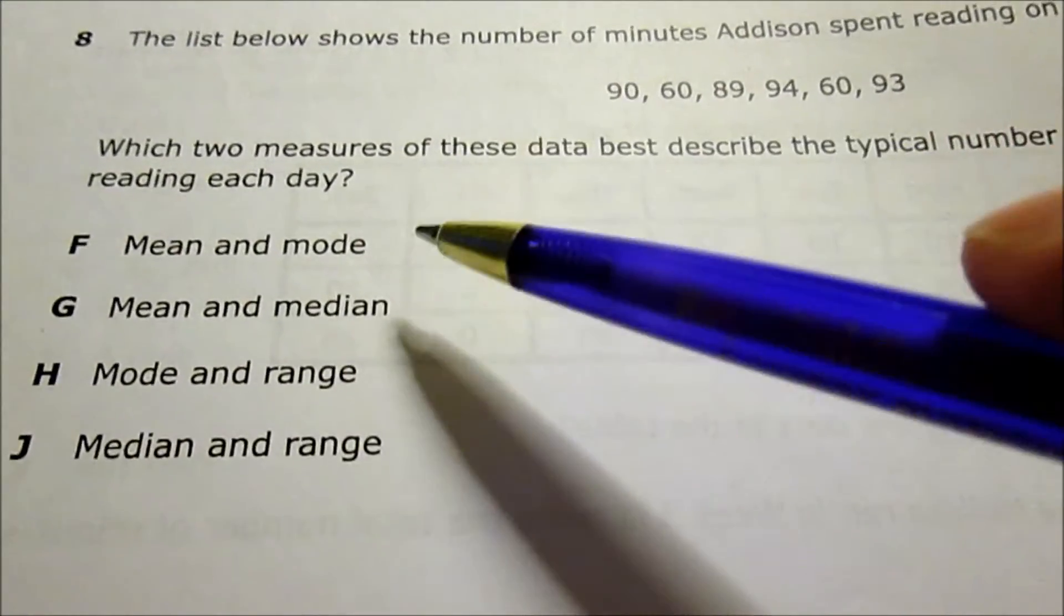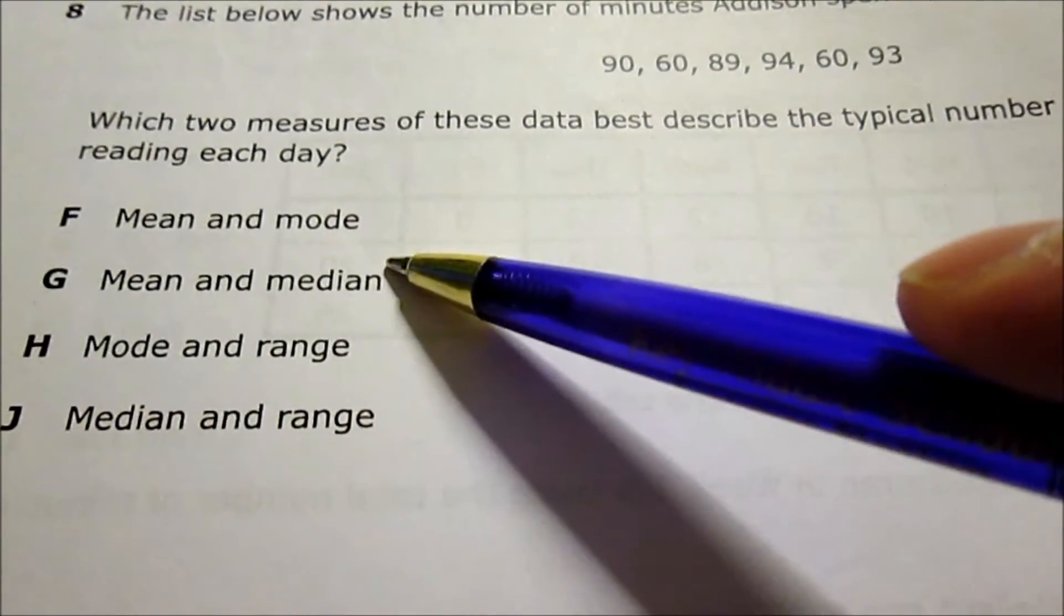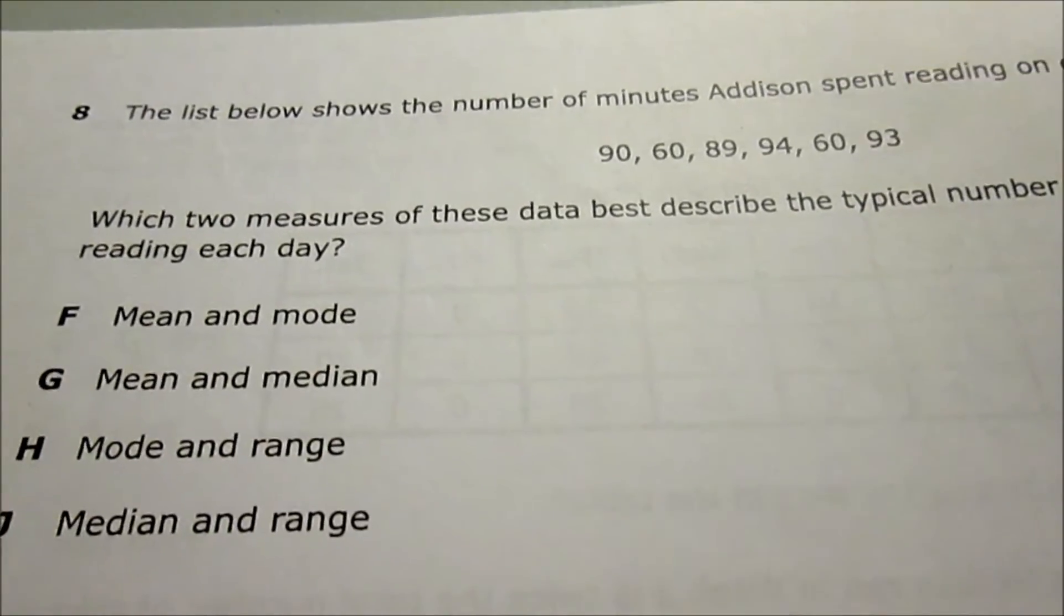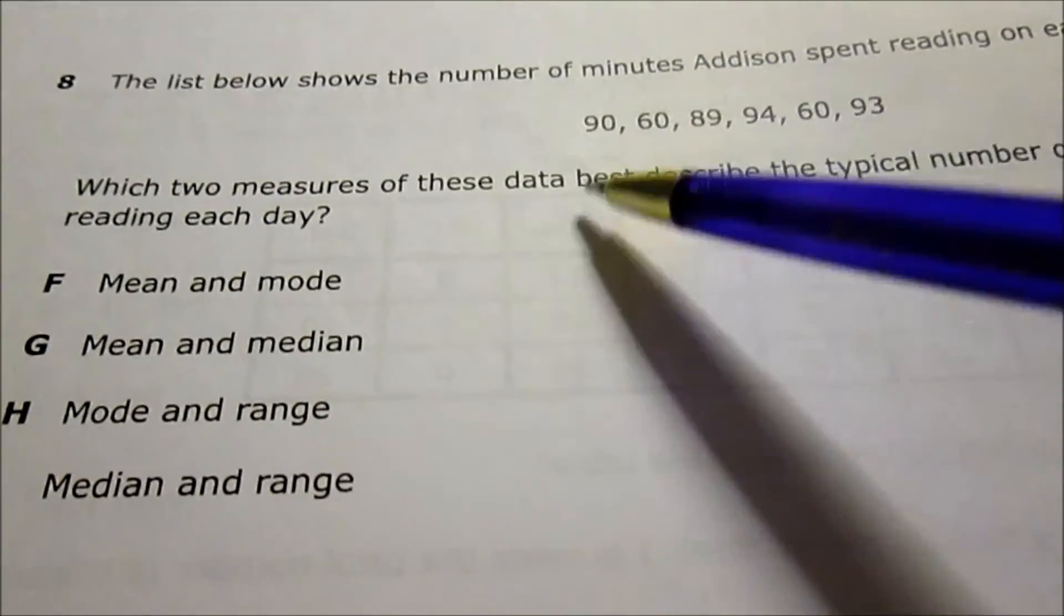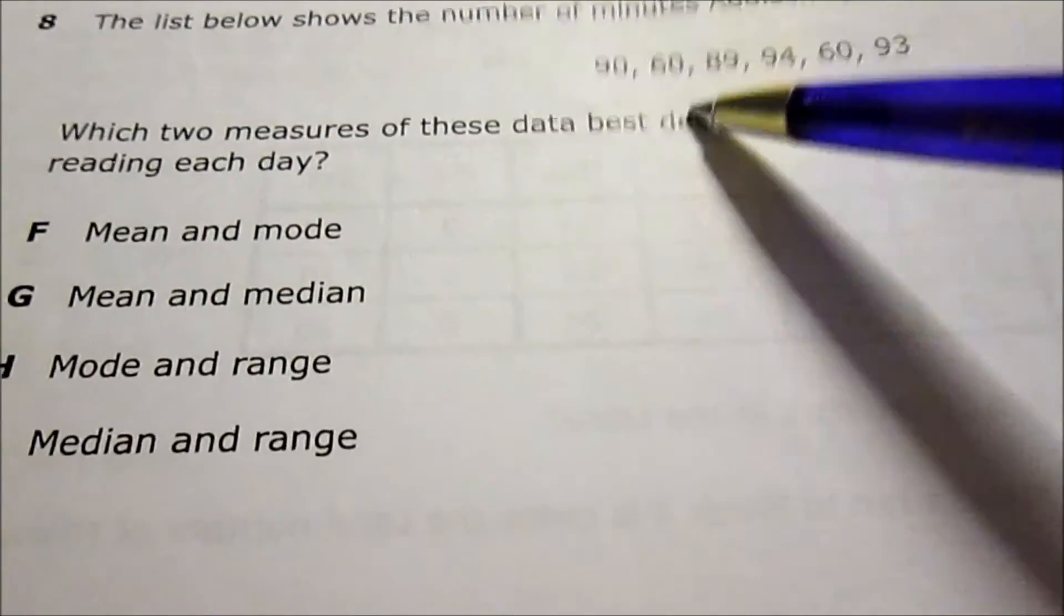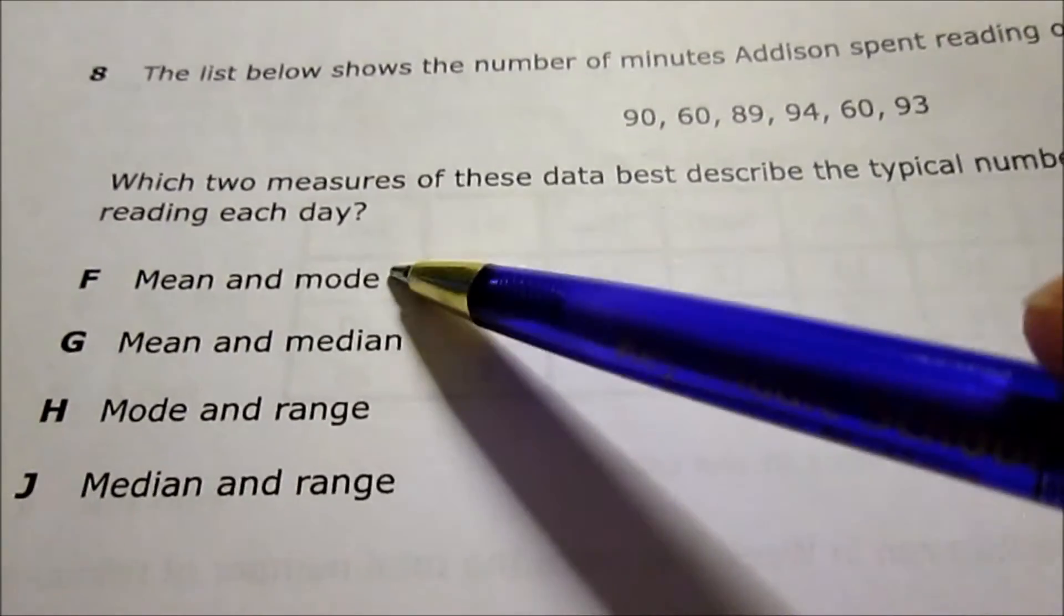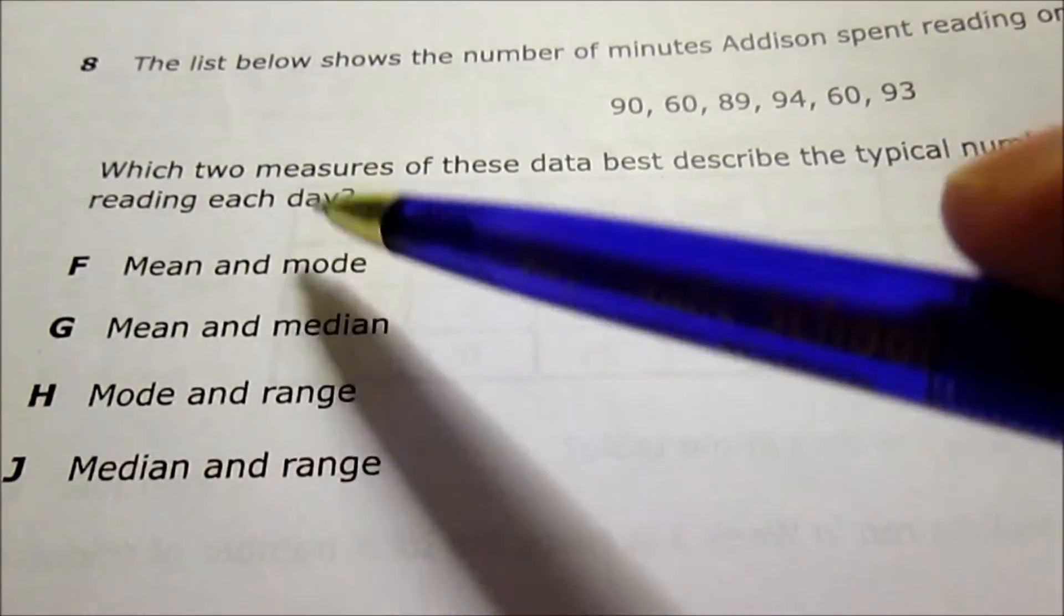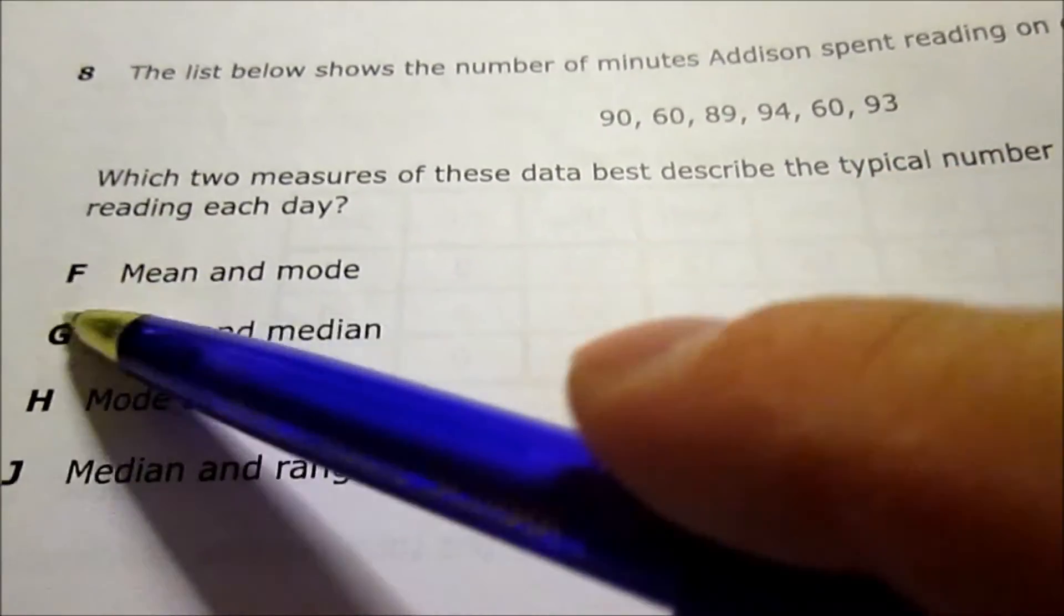The next one: mode and median. Mode means the number that shows up the most, and median means the middle number. It's talking about typical, frequently. The same number frequently, that's mode. Whatever number appears the most would make more sense here than the middle number. So the average and the one that occurs the most, F is the best answer for question 8.